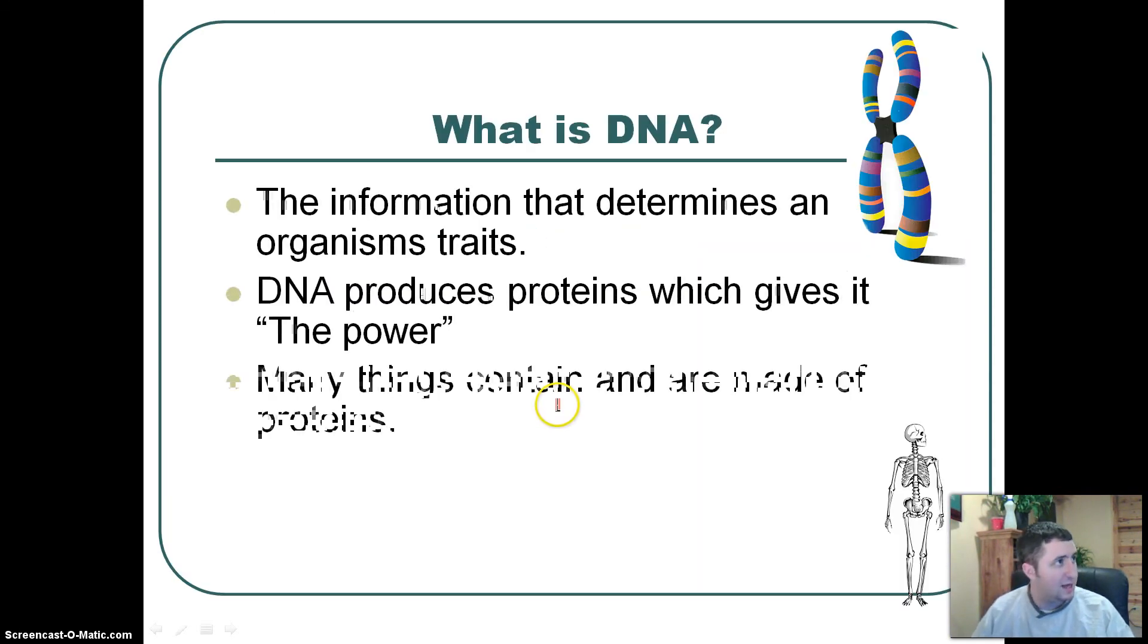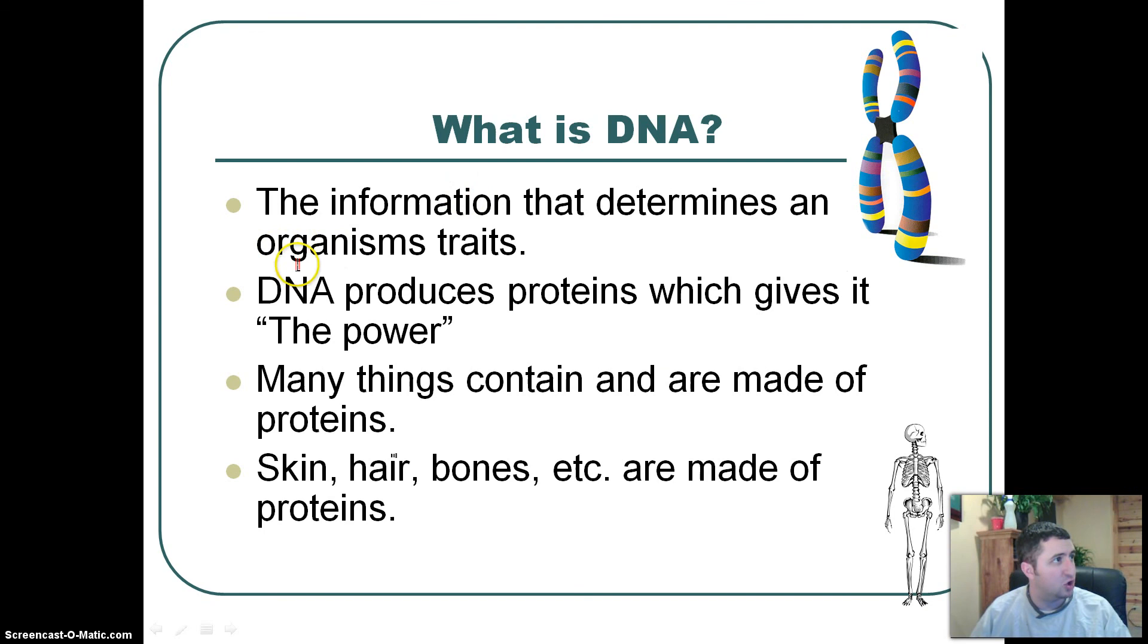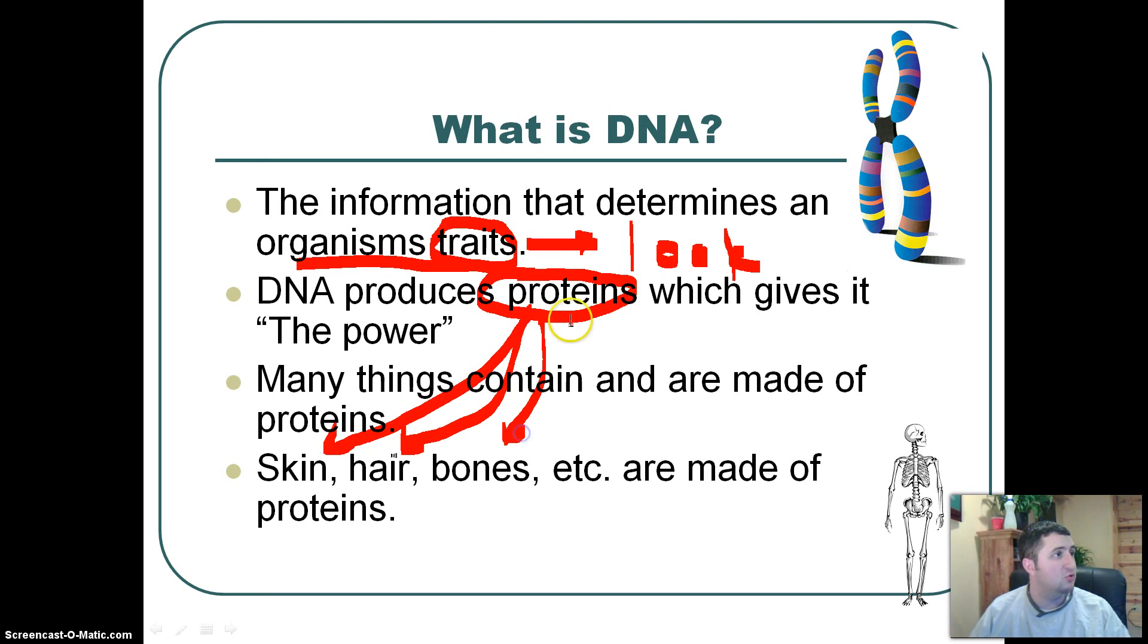So what is DNA? Well, it is the information that determines what an organism's traits are like. And if you remember anything about traits, it is what you look like. So traits are things that you look like, and DNA produces proteins, which will allow proteins to make skin, hair, bones, etc.